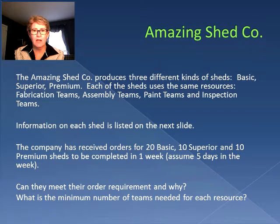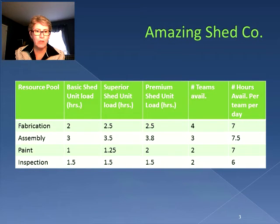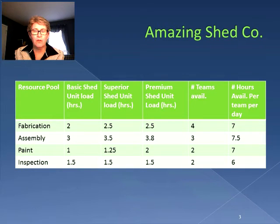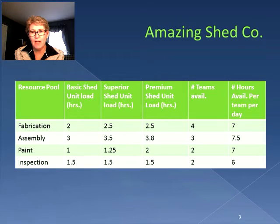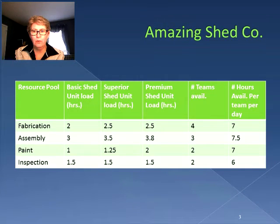The information about the shed company and their different resource pools is on this slide. We have four different resource pools: fabrication, assembly, paint, and inspection. There are three different sheds with different unit loads for each type. The basic shed has 2 hours for fabrication, 3 for assembly, 1 for paint, and 1.5 for inspection. The superior shed has 2.5, 3.5, 1.25, and 1.5 respectively. The premium shed has 2.5, 3.8, 2, and 1.5 respectively.